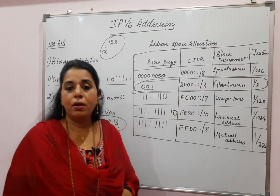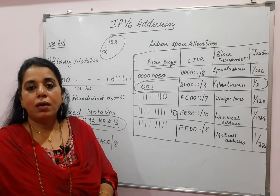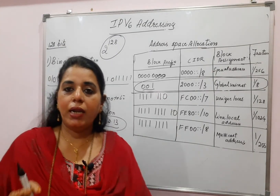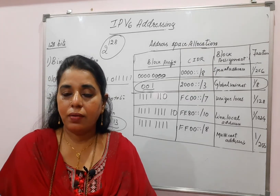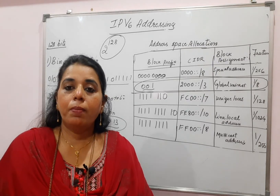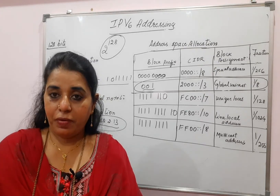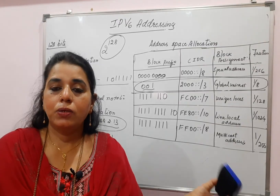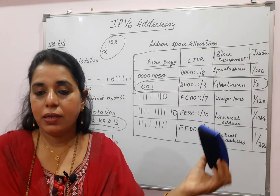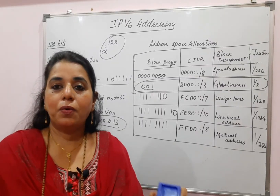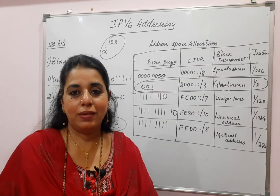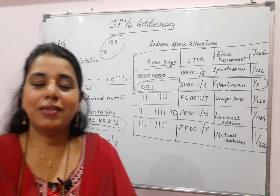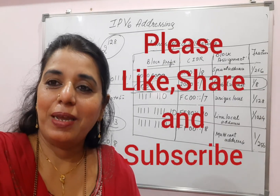Just knowing that 128 bits are in IPv6 is not enough — you also need to know the suffix and prefix parts of an IPv6 address. The next topic will make these details very clear. Hope the explanation is clear to you all. Thank you, take care, bye.